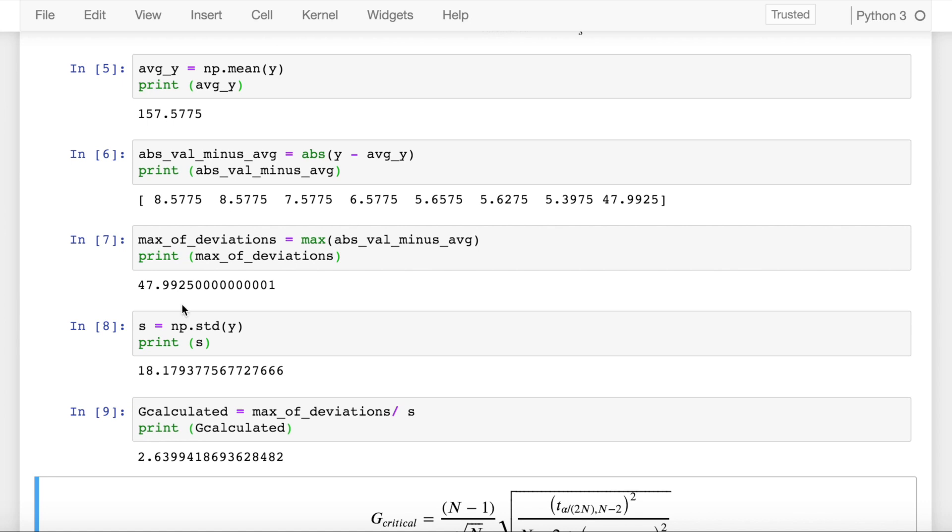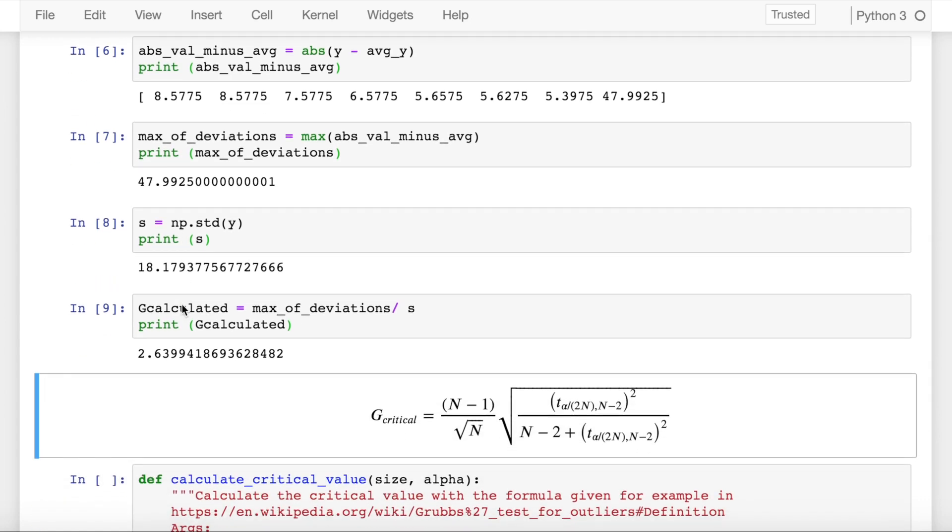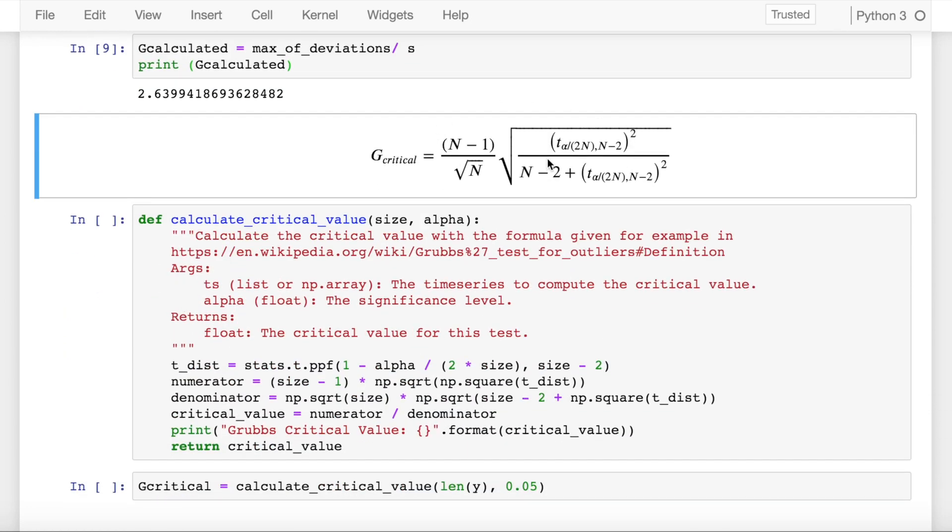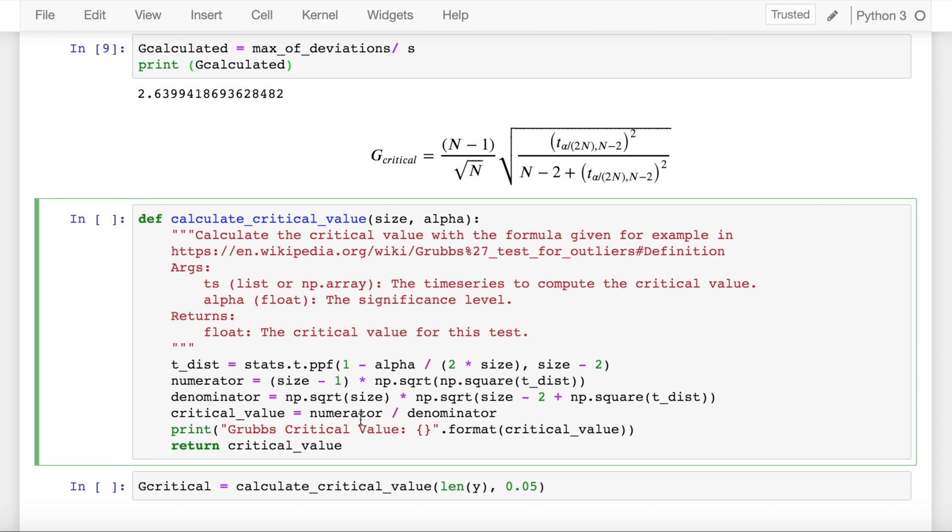Now if the whole idea of calculated is clear to you, let's move on to the critical value calculation. So the critical value calculation is formulated into this Python function wherein I have my numerator which is n-1 into the square of the square root of the numerator term. Similarly the denominator term is what I've included here. So whenever you get a chance you can go through the notebook. I'll be sharing the link of the notebook below. So this formula is basically implemented into this Python function called calculate_critical_value wherein it accepts two values.